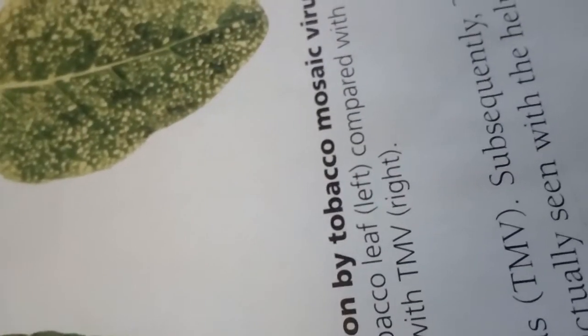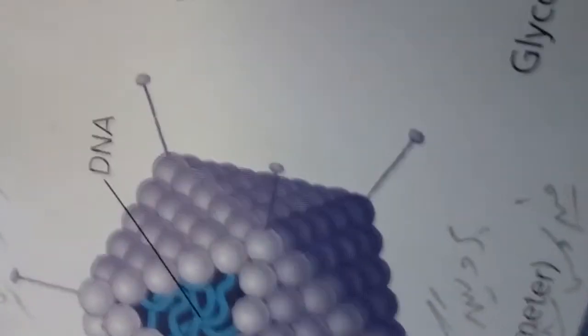Capsids are built from a large number of protein subunits called capsomers, but the number of different kinds of proteins is usually small. Tobacco mosaic virus has a rigid rod-shaped capsid made from over a thousand molecules of a single type of protein arranged in a helix.